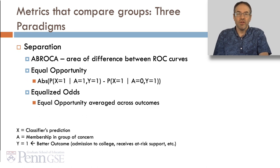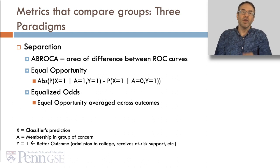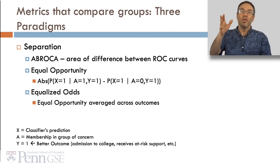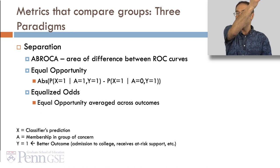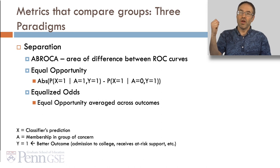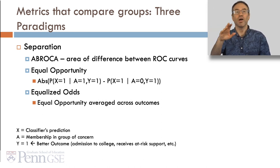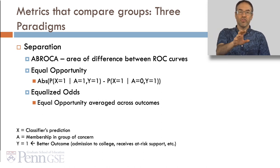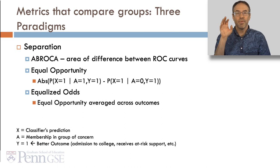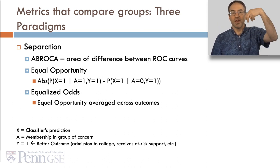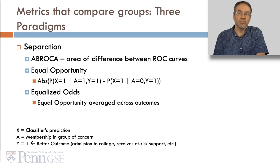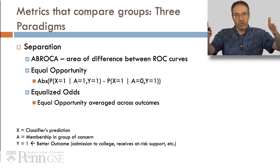In the second paradigm, separation, we have metrics such as ABROCA, which is the area of difference between ROC curves. ABROCA is not simply taking the two AUC ROC values and subtracting them — for example, if for low-risk students the model does really well with group A and badly with group B, but for high-risk students it does really well with group B and not group A, that will have a very high ABROCA even if the overall AUC ROCs are the same. A second separation metric is equal opportunity, which takes the absolute difference of the probability of a certain prediction given both group membership and the better outcome versus the probability given non-membership and the better outcome. A third is equalized odds, which is equal opportunity averaged across all possible outcomes.